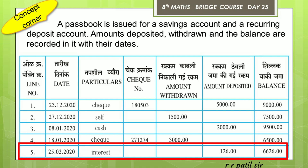And the last entry is that on 25th February, the interest from the bank is 126, so at the end we have a balance of 6,626. So this passbook is only a record of all transactions.